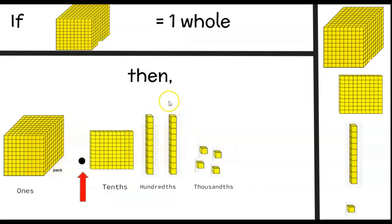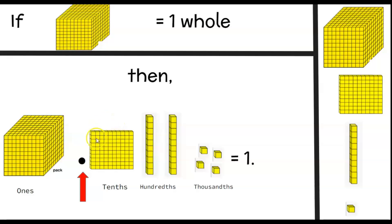Let's try this — let's write this decimal number. If the thousandths block is one whole, how would we write this representation? In our ones place we have one thousandths block, so we have one whole. We have one tenth, two hundredths, and four thousandths. So we would read this number as one and one hundred twenty-four thousandths. We always say the place value of where we ended in our decimal — we ended in the thousandths place, so we say thousandths at the end.